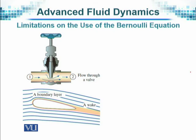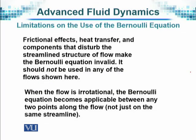Where there is a boundary layer, we will not be able to apply Bernoulli's equation, because the presence of a boundary layer means that viscous effects are there. Bernoulli's equation is derived on the assumption that it is for an inviscid fluid. So, frictional effects, heat transfer, and components that disturb the streamlined structure of flow make the Bernoulli equation invalid.